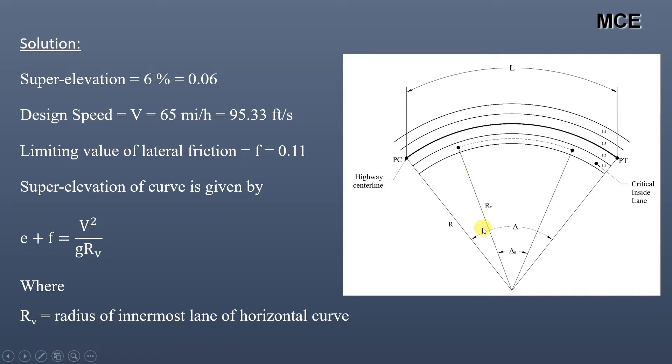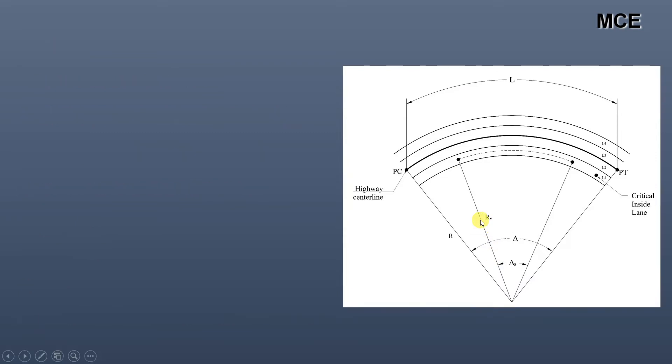Putting values, we get 0.06 + 0.11 = (95.33)²/(32.2 × Rv). From this, we can calculate the value of Rv = 1660 feet.